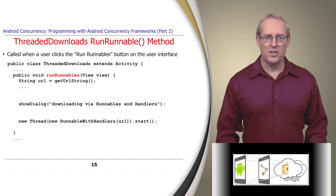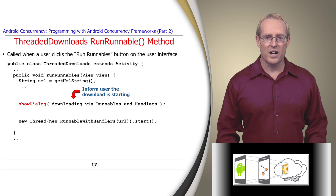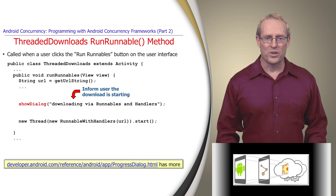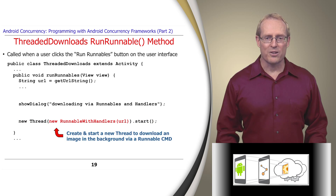The Run Runnable method, called when a user clicks the Run Runnable button on the user interface, begins by obtaining the requested URL from the user's input, and then informing the user that the download has begun via a progress dialog. Finally, this method creates and starts a new thread to download the requested image in the background via an anonymous instance of the Runnable With Handlers class.